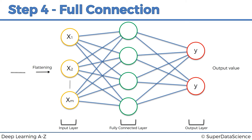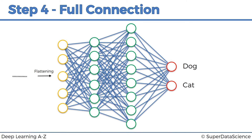Let's look at a more realistic example, because the simplified one is a bit too simple. Here we've got a better-looking artificial neural network where we have five attributes on the inputs, then in the first hidden layer we have six neurons, in the second fully connected layer we have eight neurons, and then we have two outputs — one for dog and one for cat.